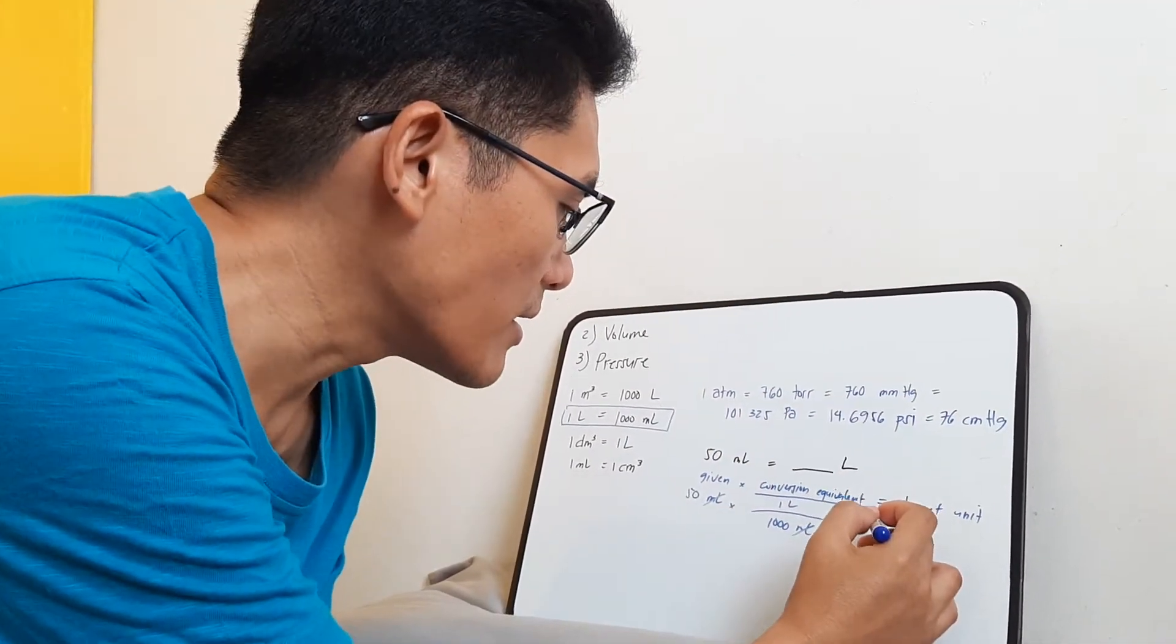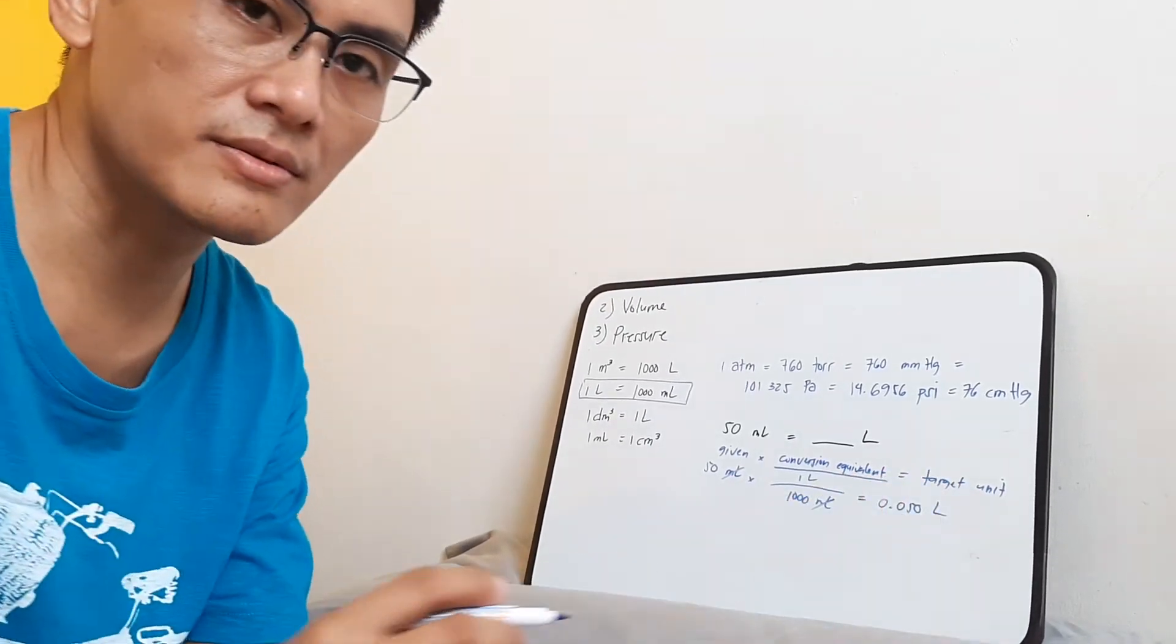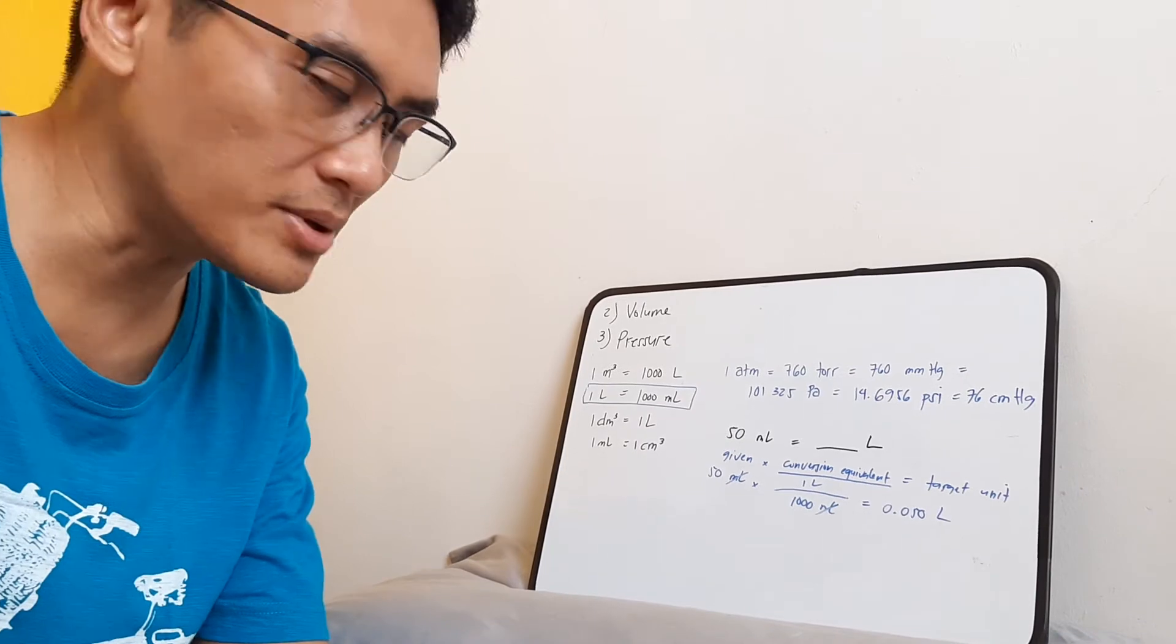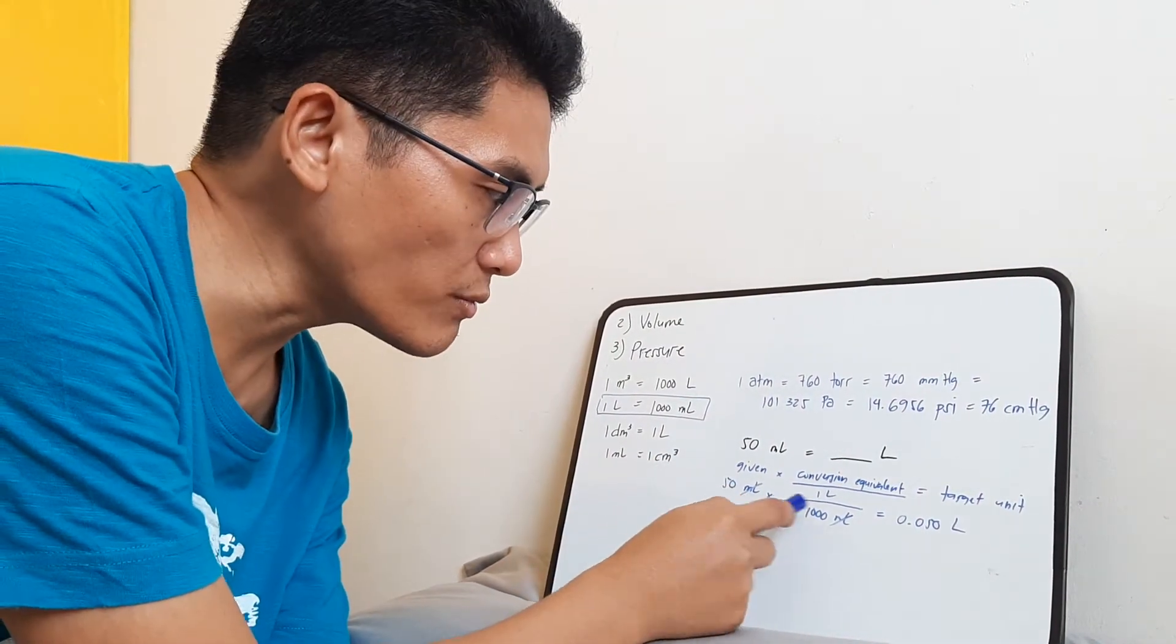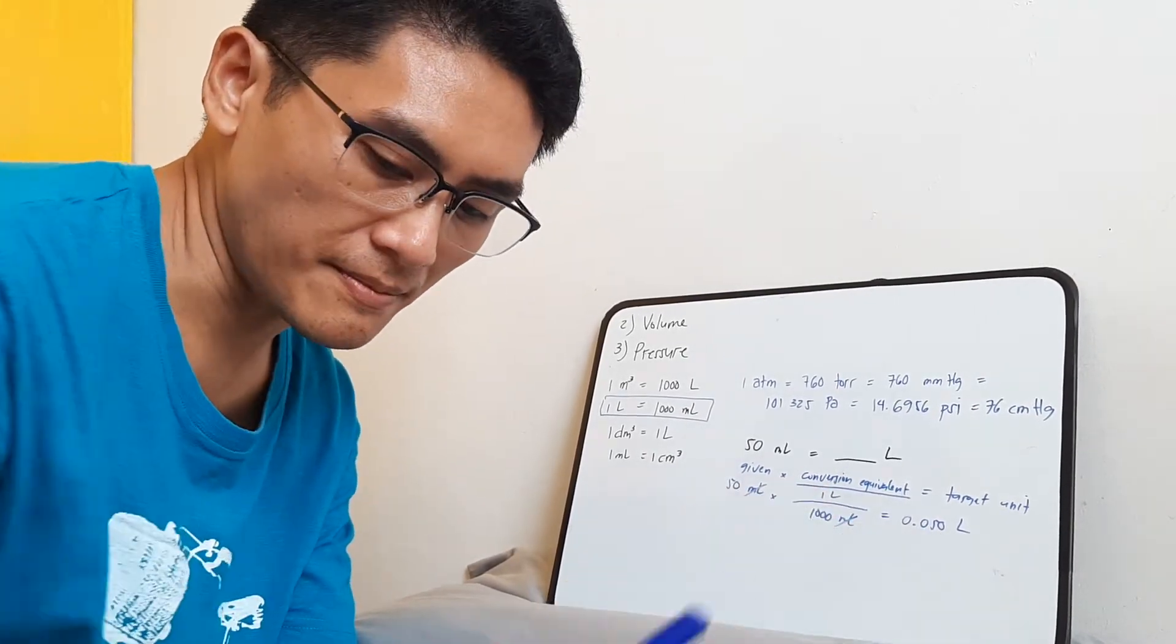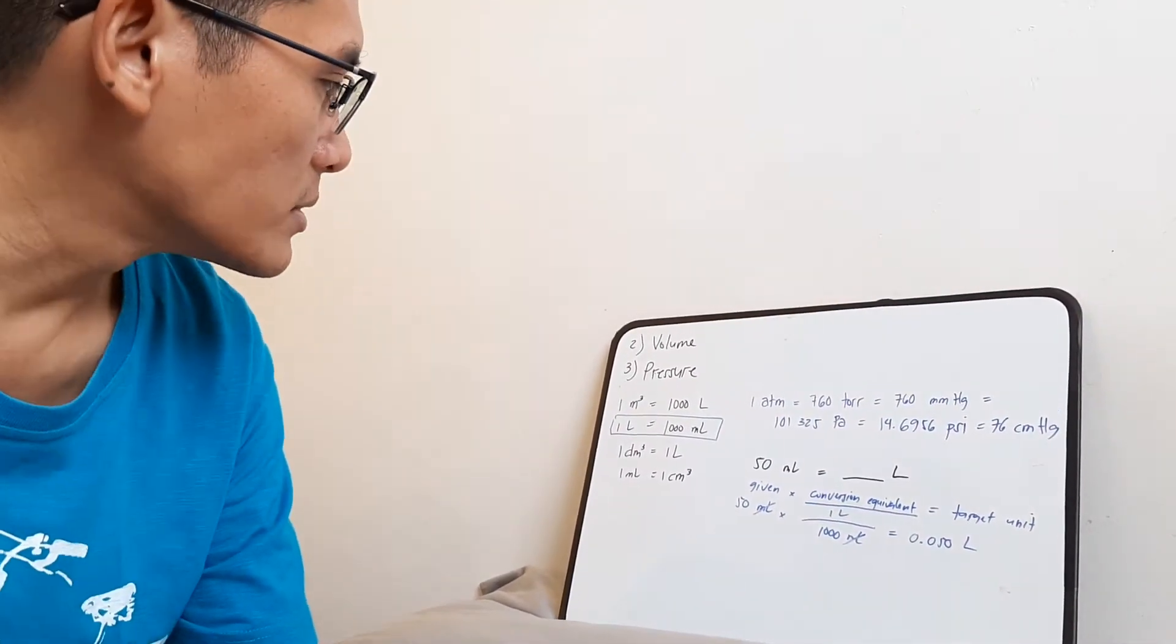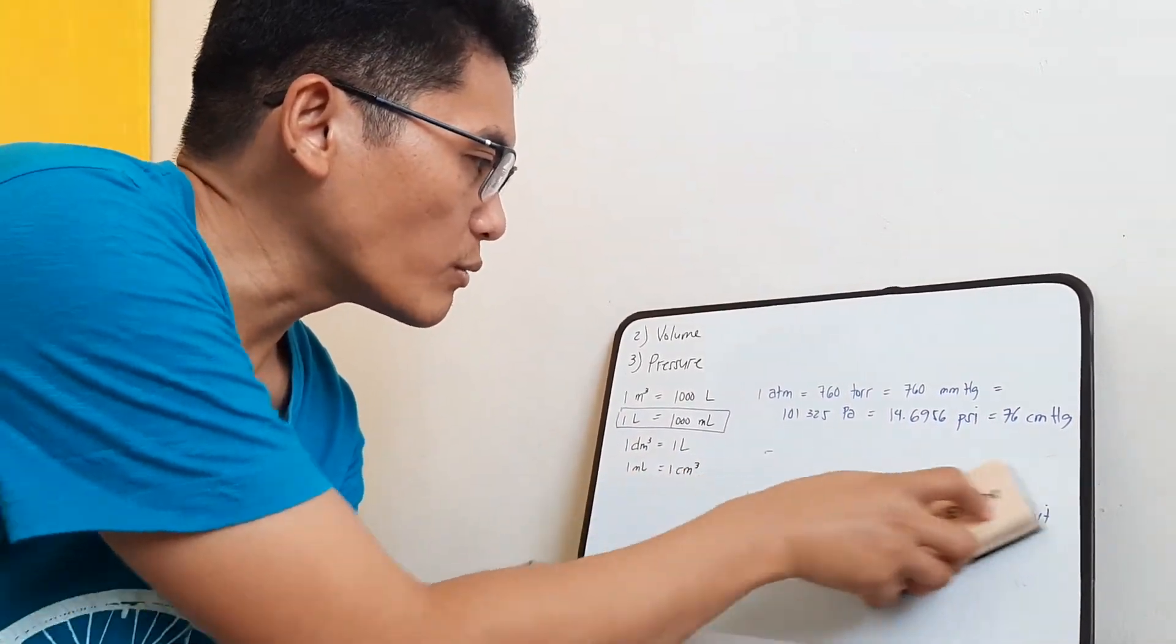And now you have 50 times 1 divided by 1,000. So obviously that would be 0.050 liters. So pretty simple step. You get the given, multiply it with a conversion equivalent, and then you get the answer.